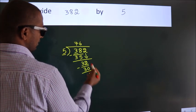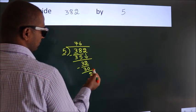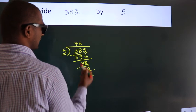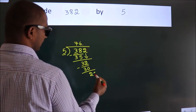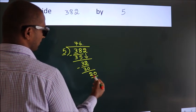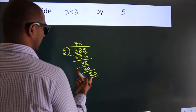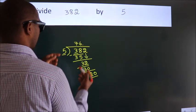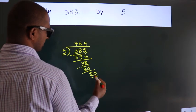After this, no more numbers to bring down. So what we do is put a dot and take 0, making 20. When do we get 20 in the 5 table? 5 times 4 equals 20.